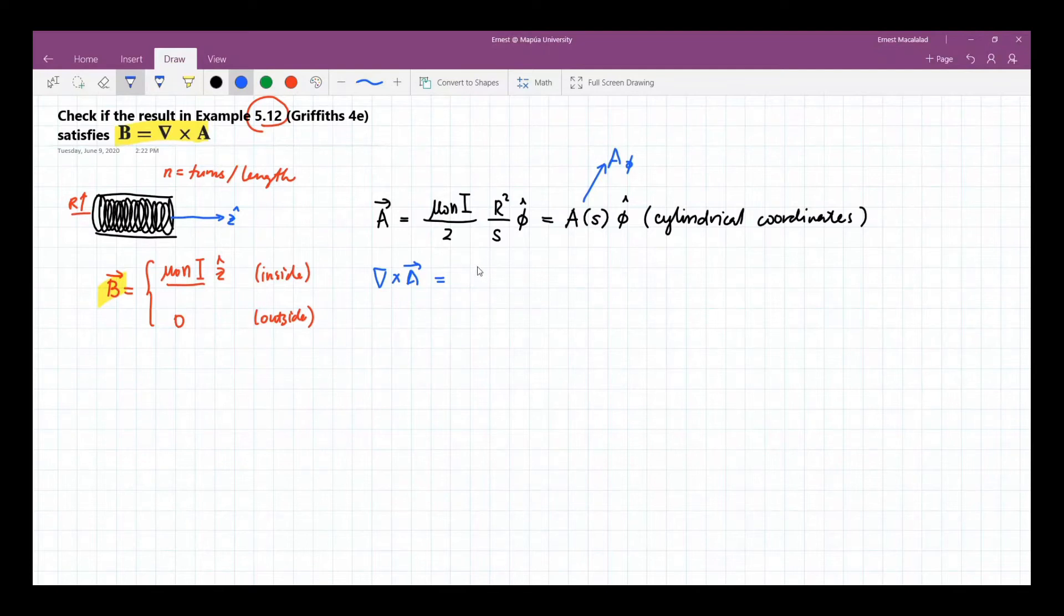So what remains is the following terms. We have a negative derivative of A phi with respect to z s hat, plus 1 over s times the derivative with respect to s of s A phi z hat.